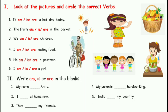Fifth: India blank my country. Our country is only one in number, so: India is my country. Sixth: I blank seven years old — I am seven years old. So children, you will complete these two activities in your English notebook. Thank you.